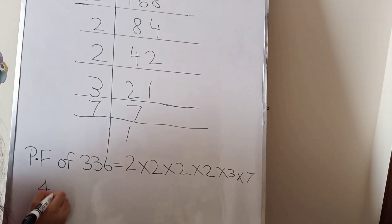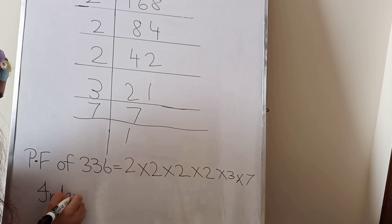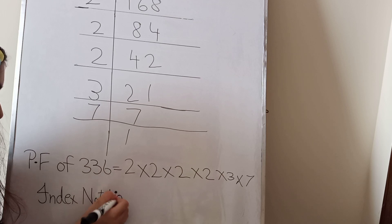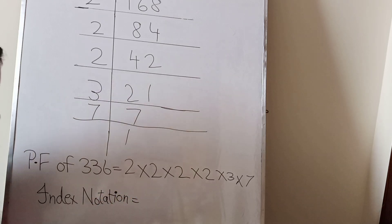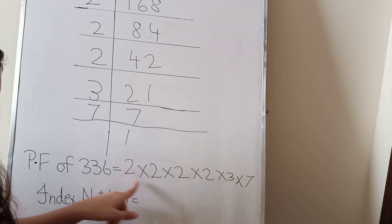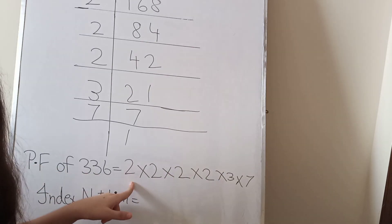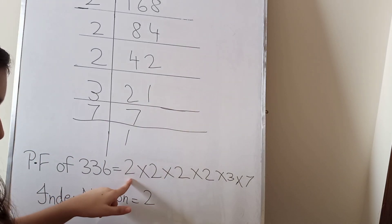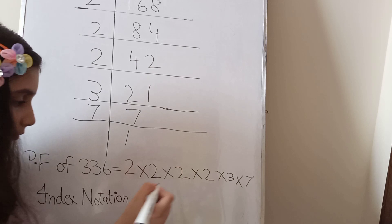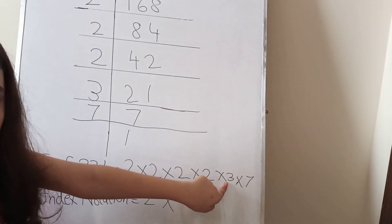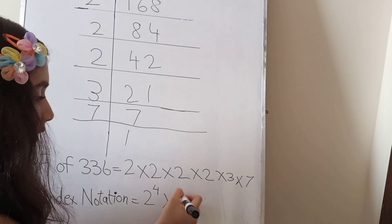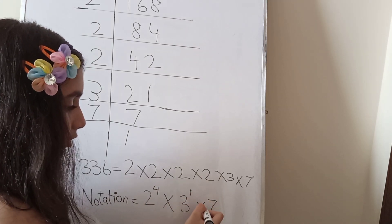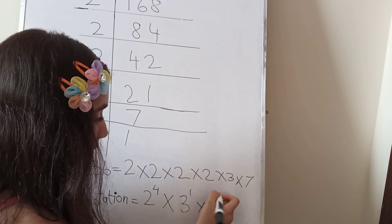Now I will write the index notation. There are four twos, that's why we will write it as 2 to the power 4. Three is single here, so we will write power 1. Seven is also alone, so its power is 1.